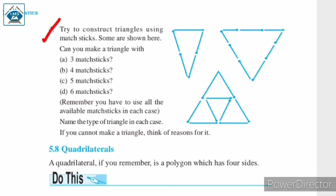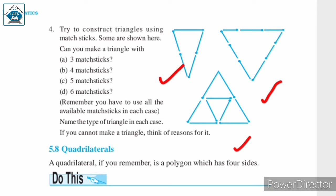Question number 4: try to construct triangles using matchsticks. Some are shown here. Can you make a triangle with 3 matchsticks, 4 matchsticks, 5 matchsticks, 6 matchsticks? Remember, you have to use all the available matchsticks in each case. Name the type of triangle in each case. If you cannot make a triangle, think of reasons for it.